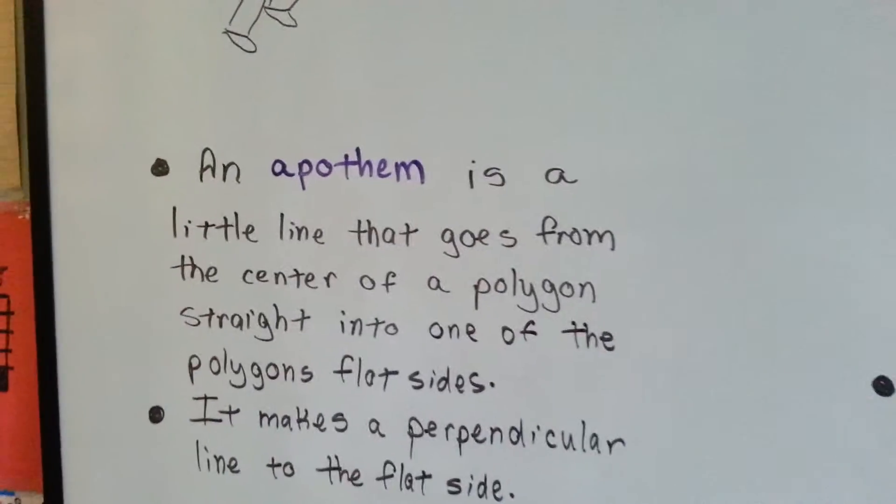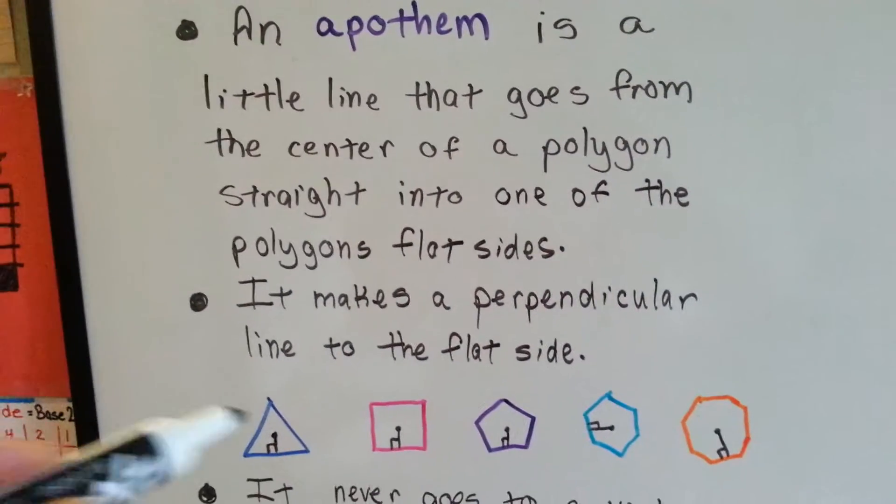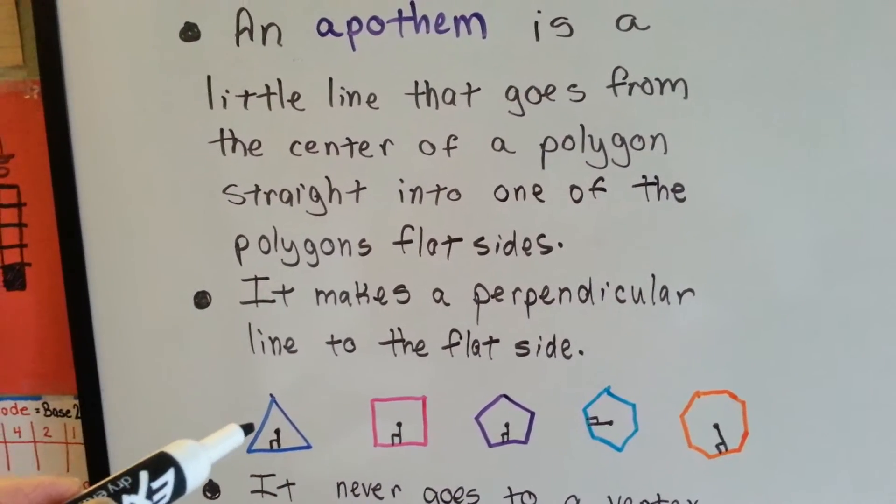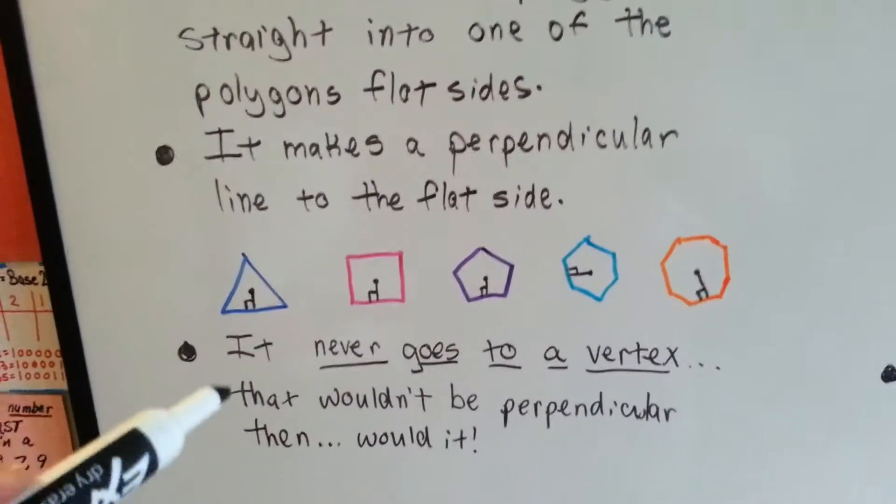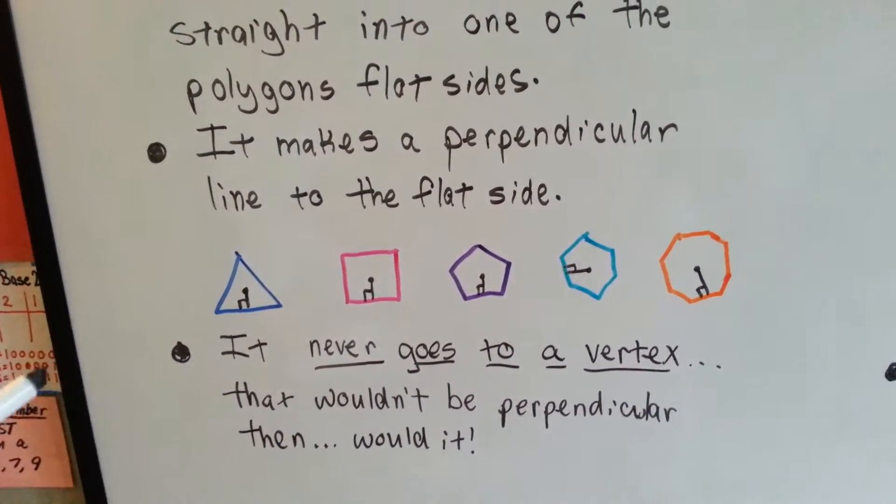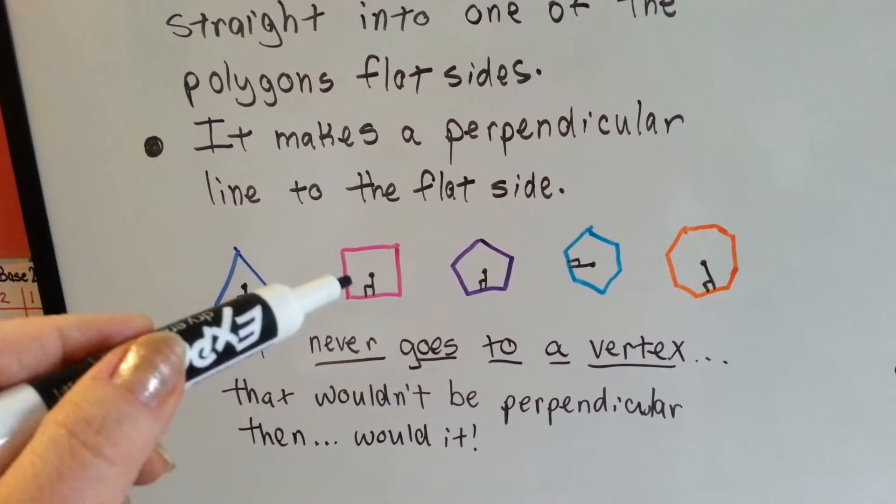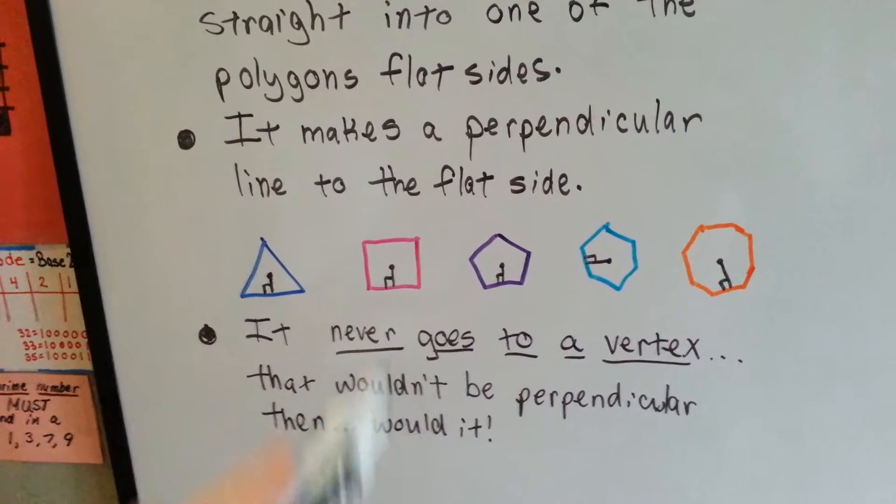First of all, an apothem is a little line that goes from the center of a polygon straight into one of the polygon's flat sides. It makes a perpendicular line to the flat side. It never goes to a vertex. That wouldn't be perpendicular then, would it? If it went into a vertex, for the square it would make a 45 degree angle. That's not perpendicular. So remember, it goes into the flat side.